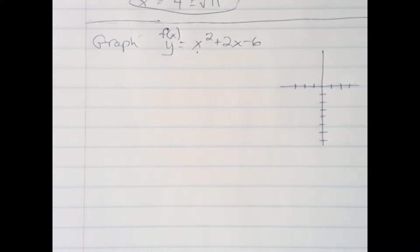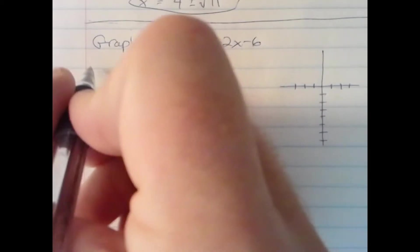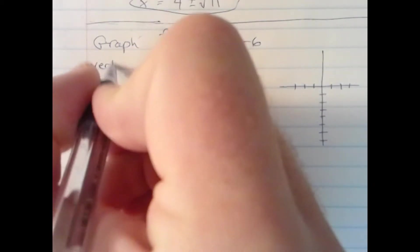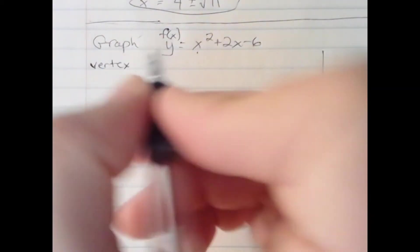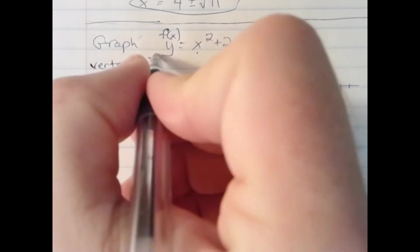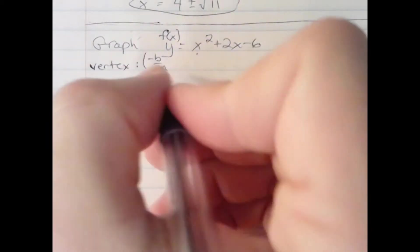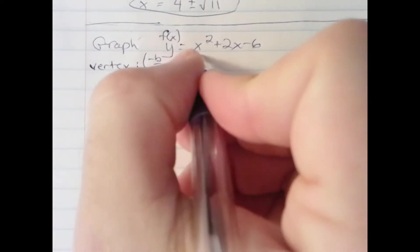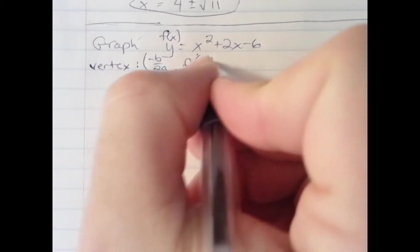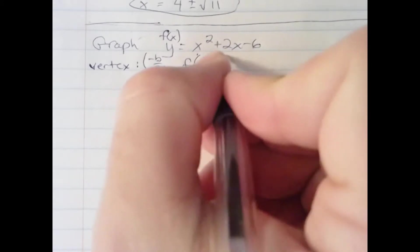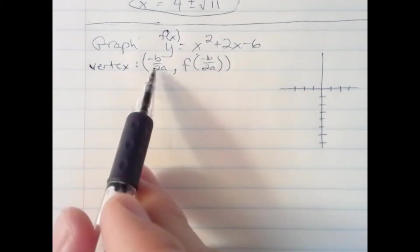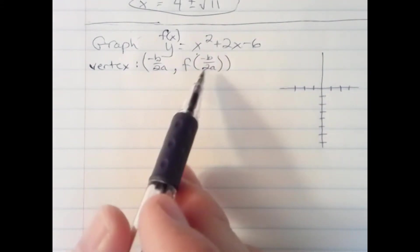First thing we want to do is find the vertex. For the vertex, if you remember the formula for finding the x-coordinate was negative b over 2a. That represents the x-coordinate. The y-coordinate would be f of negative b over 2a, meaning plug this value in once it's computed to the original function to find the y-value.